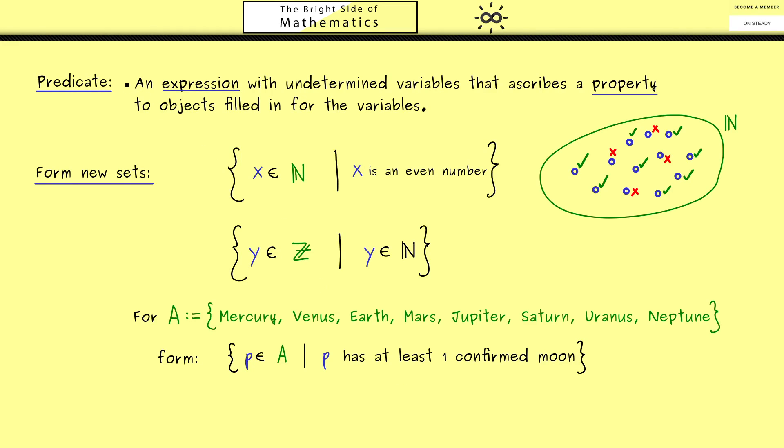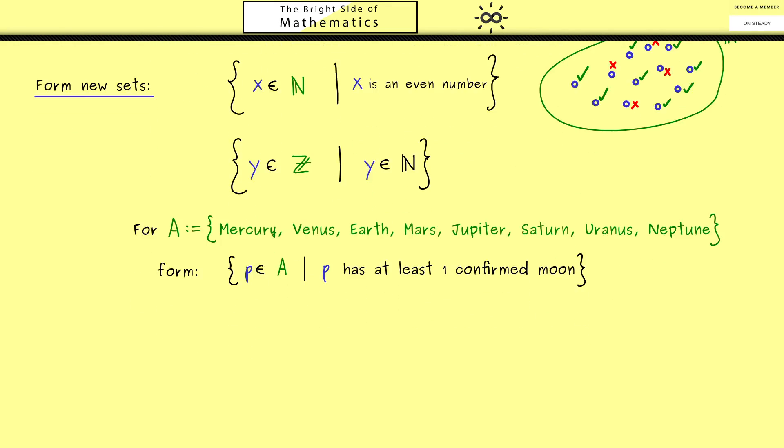Let's go back to a general predicate where we can check the truth value of every object. A natural question would be: how many objects satisfy the predicate? To answer this we have two new symbols called quantifiers.